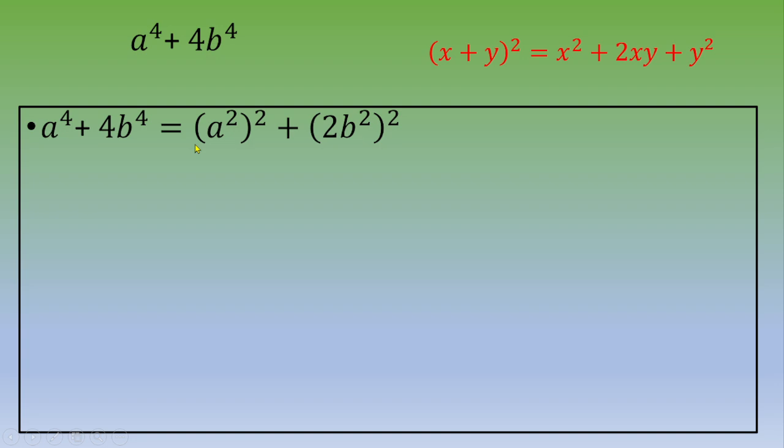If we identify a squared as x and 2b squared as y, then we end up with a squared squared. We are going to add 4a squared b squared, but at the same time we are going to subtract 4a squared b squared.